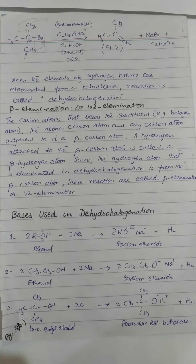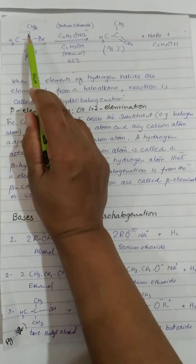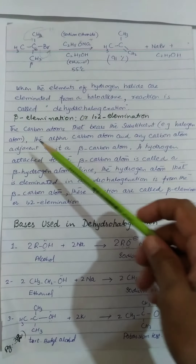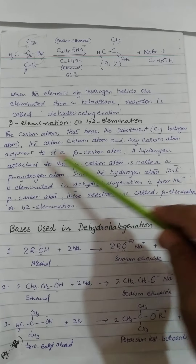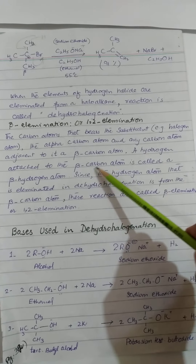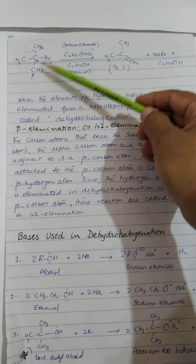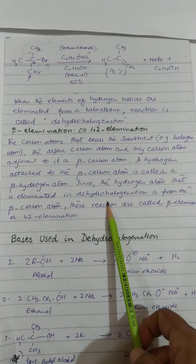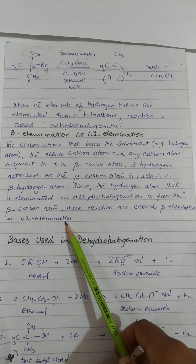اس reaction کے titles دو ہیں: اسے beta elimination بھی کہا جا سکتا ہے اور 1,2-elimination بھی، کیونکہ یہ carbon جو ہے وہ one ہے leaving group کے ساتھ اور اس کے neighboring carbon two ہوتے ہیں۔ The carbon atom that bears the substituent halogen atom is the alpha carbon atom, and any carbon atom adjacent to it is a beta carbon. A hydrogen attached to the beta carbon atom is called a beta hydrogen atom. Since the hydrogen atom that is eliminated is from the beta carbon atom, these reactions are called beta elimination or 1,2-elimination.